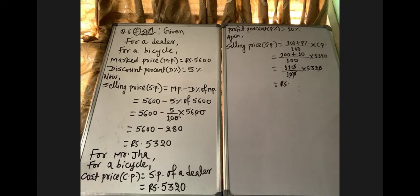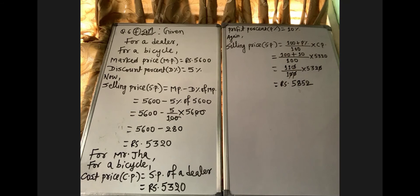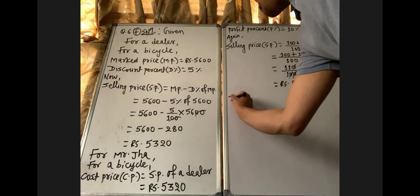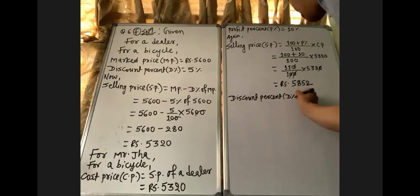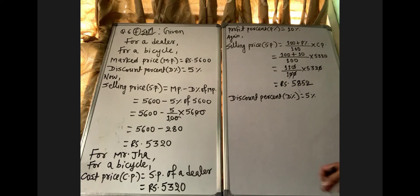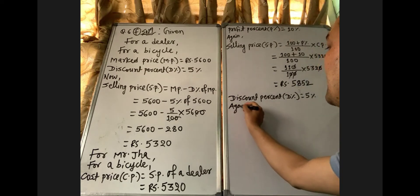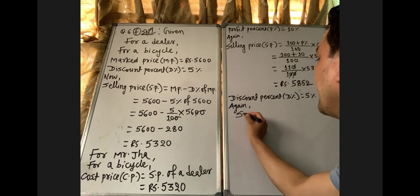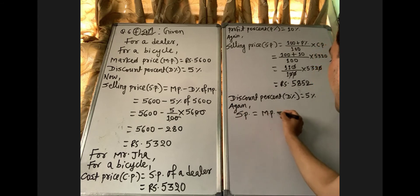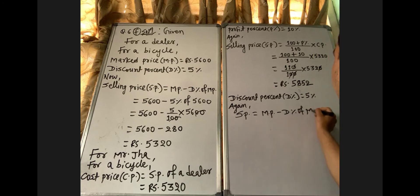We get SP of Mr. Zha = Rs 5852. But the question asks for the mark price of Mr. Zha. Discount percent is also given as 5%. So we use the formula again: SP = MP minus discount percent of MP.